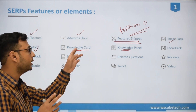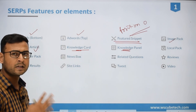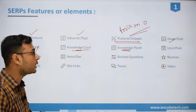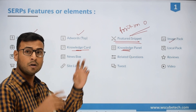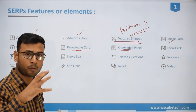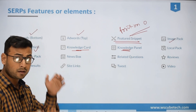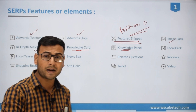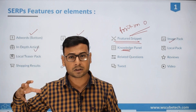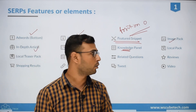We can put our content into the knowledge graph — we can devise our strategy in such a way that our content comes into the knowledge graph. That is a big scope. If you are not ranking somewhere in the organic results and somehow you manage to rank in the knowledge graph or knowledge panel, that is something very good.